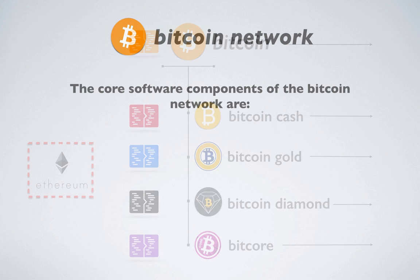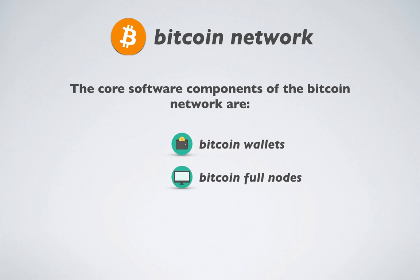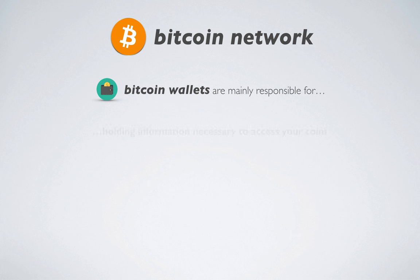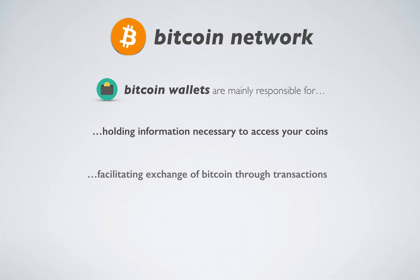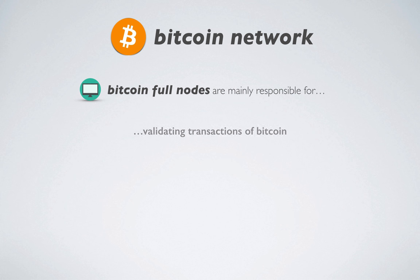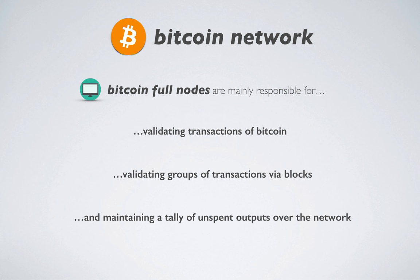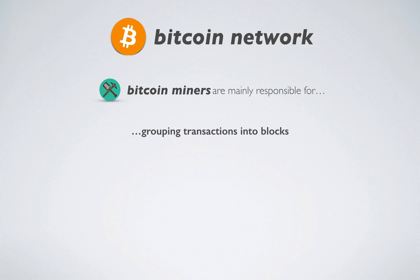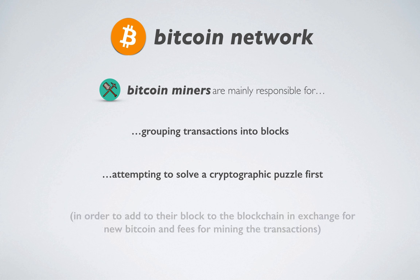The core software components of the Bitcoin network are wallets, full nodes, and miners. Wallets are mainly responsible for holding information necessary to access your coins, to facilitate exchange of Bitcoin through transactions, and interact with the network to derive your balance. Full nodes are responsible for validating transactions, validating groups of transactions via blocks, and maintaining a tally of unspent outputs over the network. Miners are responsible for grouping transactions into blocks and attempting to solve a cryptographic puzzle first, in order to add their block to the blockchain in exchange for new Bitcoin and fees.